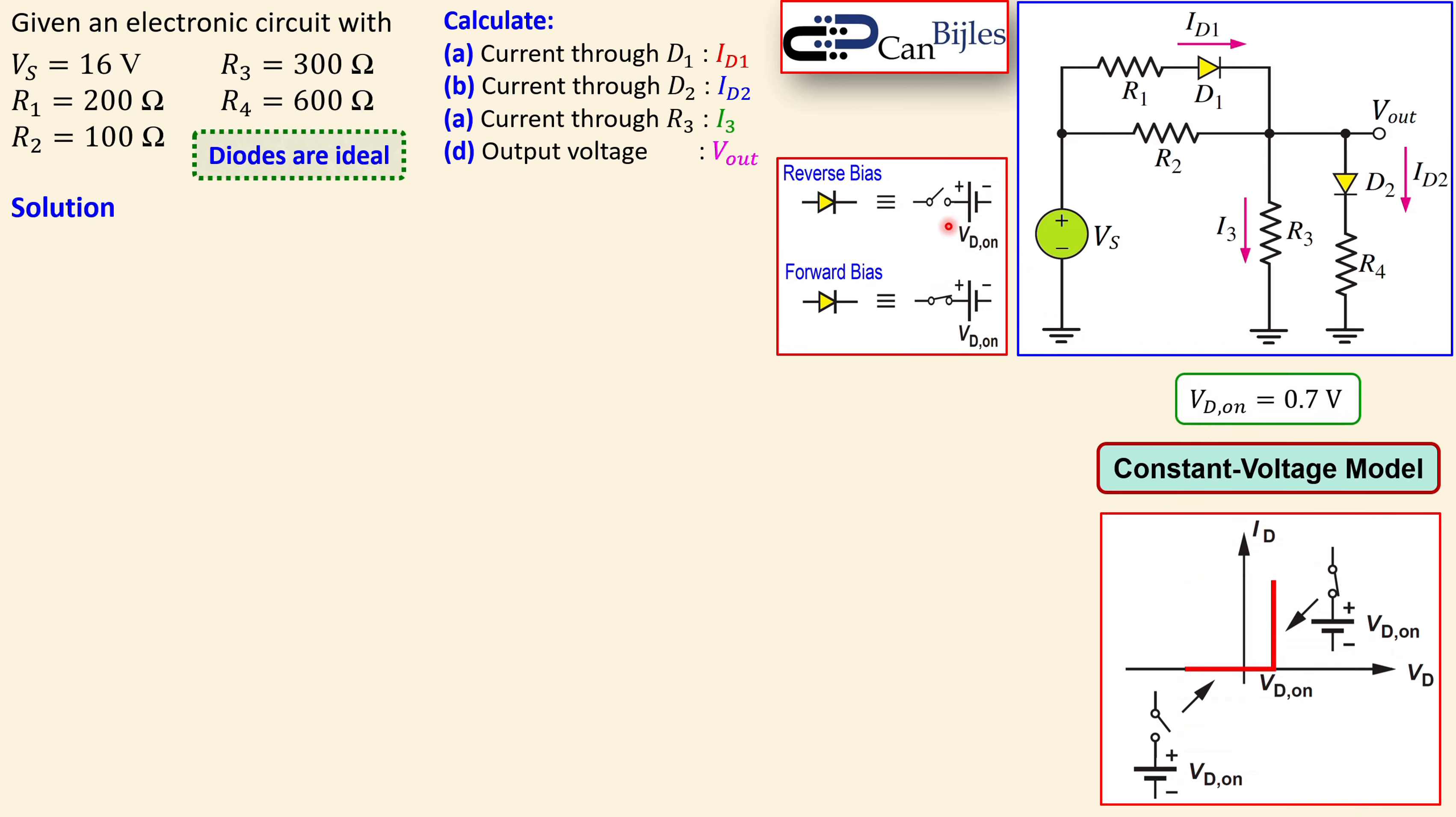So this is reverse bias if it is open. There is no connection, no current flow. If there is a current flow, there will be forward bias and it will be just a battery which is 0.7 volts, valid for D1 and D2. We would like to calculate the current through D1, the current through D2, the current through resistor R3, and also the output voltage Vout. So we have four things we need to determine here.